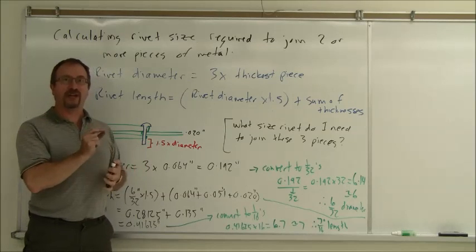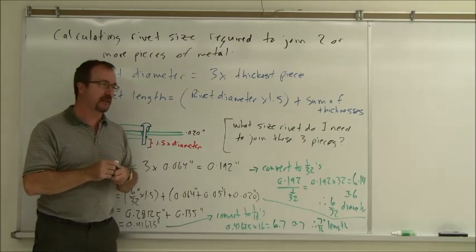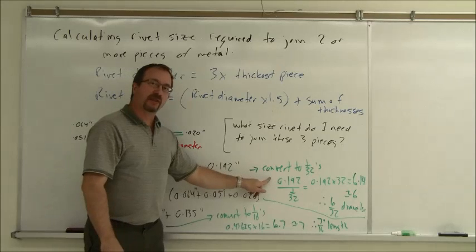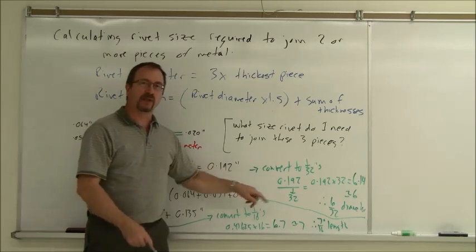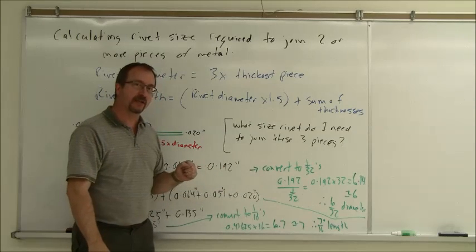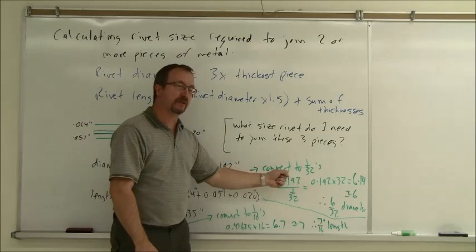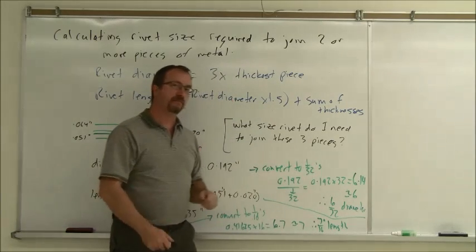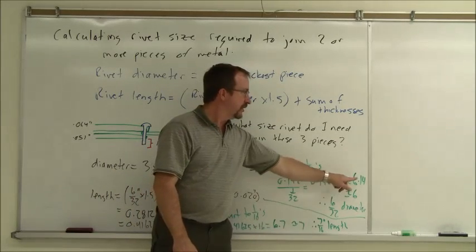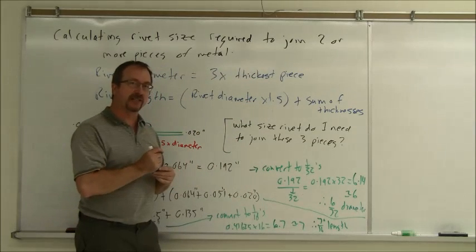The problem is I can't go and get a rivet that's 0.192 inches thick. I have to get the closest 32nd of an inch because they come in 32nds. So, to convert to 32nds, I take 0.192 and divide it by 1/32. I want to see how many times 1/32 of an inch goes into 0.192. When you divide by a fraction, you actually multiply by the bottom number. So, I take that 0.192 and multiply it by 32. That gives me 6.14 and a little bit. I round that to the closest whole number, which is 6. Therefore, the diameter of rivet I'm going to use is 6/32 of an inch.